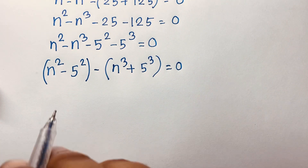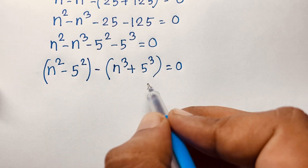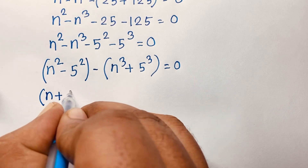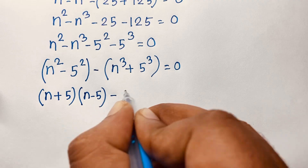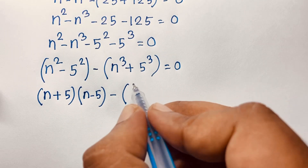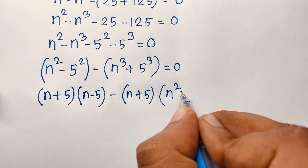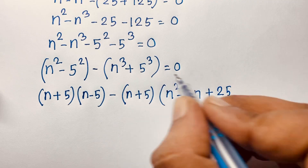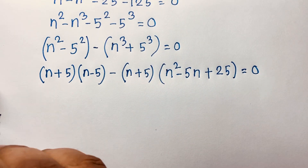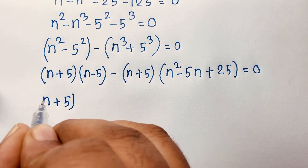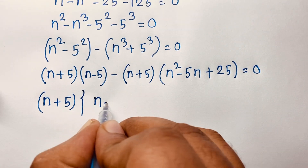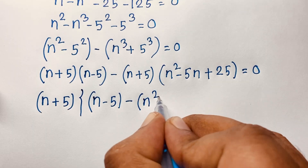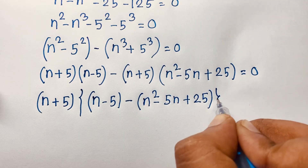Now I can easily apply two formulas here. We have a squared minus b squared, and a cubed plus b cubed. We know that a squared minus b squared equals a plus b times a minus b, so this becomes n plus 5 times n minus 5. And a cubed plus b cubed equals a plus b times a squared minus ab plus b squared, which gives n plus 5 times n squared minus 5n plus 25, all equal to 0.